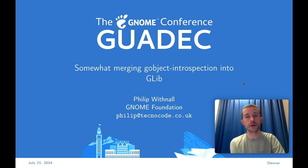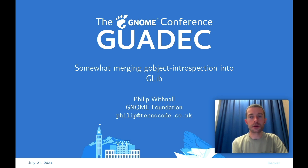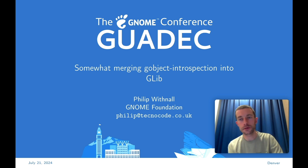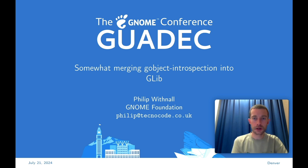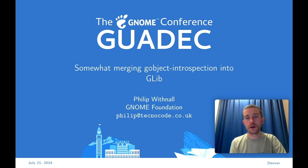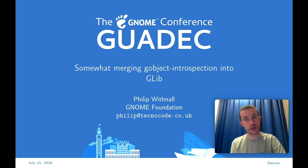Emanuele Bassi did a talk yesterday about these changes from the point of view of introspection annotations and library APIs, but I'll be talking today about it from the point of view of GLib, apps, language bindings, and distros. The work for this merge was funded by the Software and Technology Fund, the STF, and it was to help with keeping our fundamental infrastructure up to date. I'll go through the problems with the old arrangements, what we changed, and how it impacts on apps, bindings, and distros.